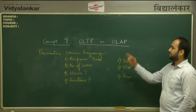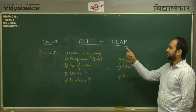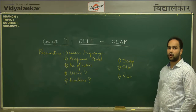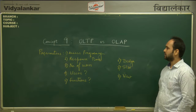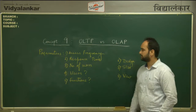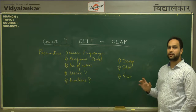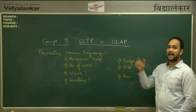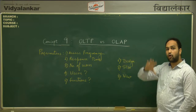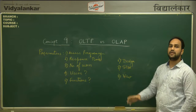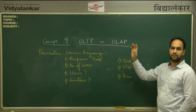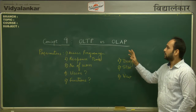Concept 9: OLTP vs OLAP. OLTP stands for Online Transactional Processing and OLAP stands for Online Analytical Processing — basically database vs data warehouse. The primary difference is that OLTP has day-to-day data, whereas OLAP has current data, historical data, summarized data, and integrated data.